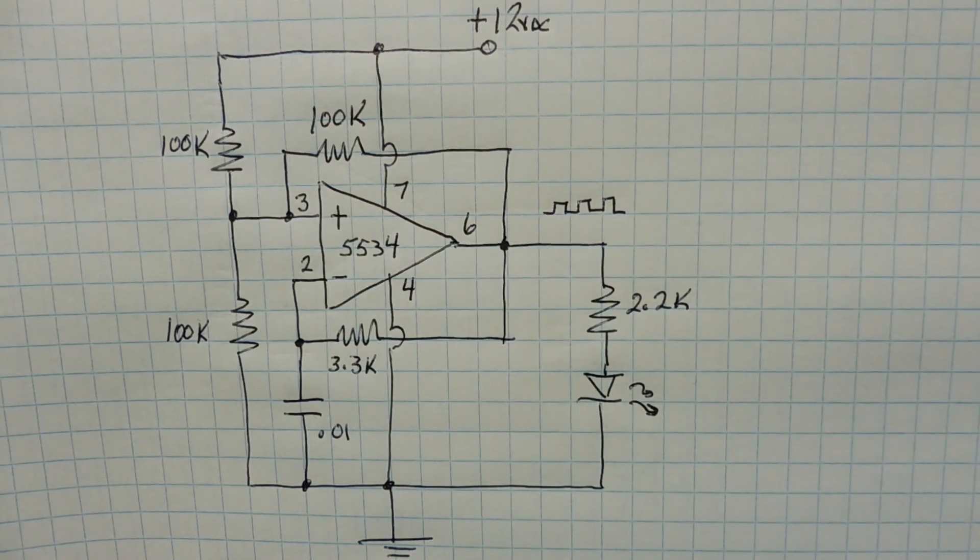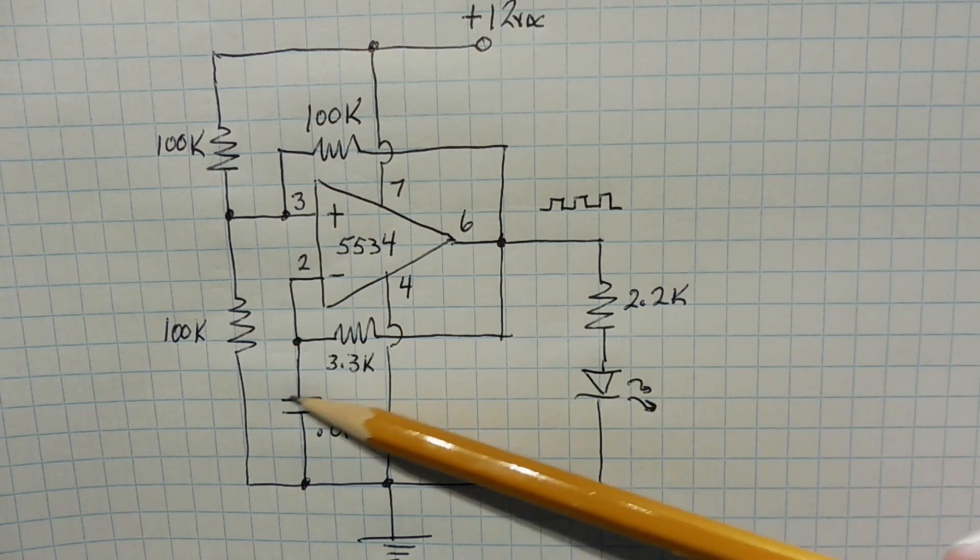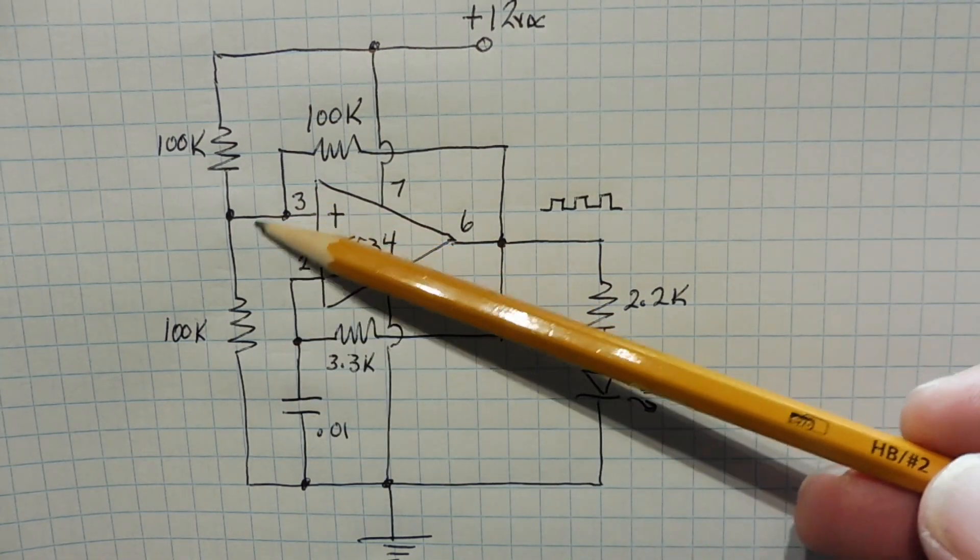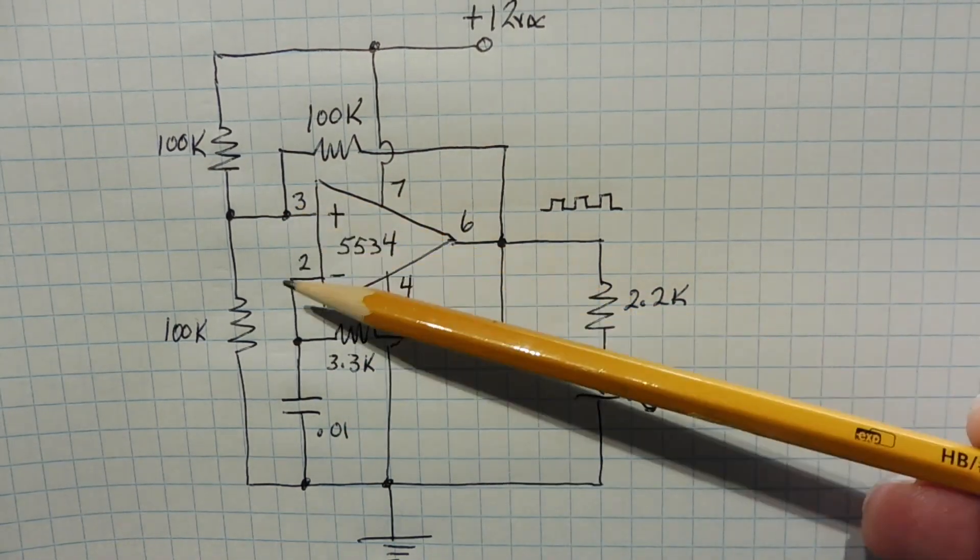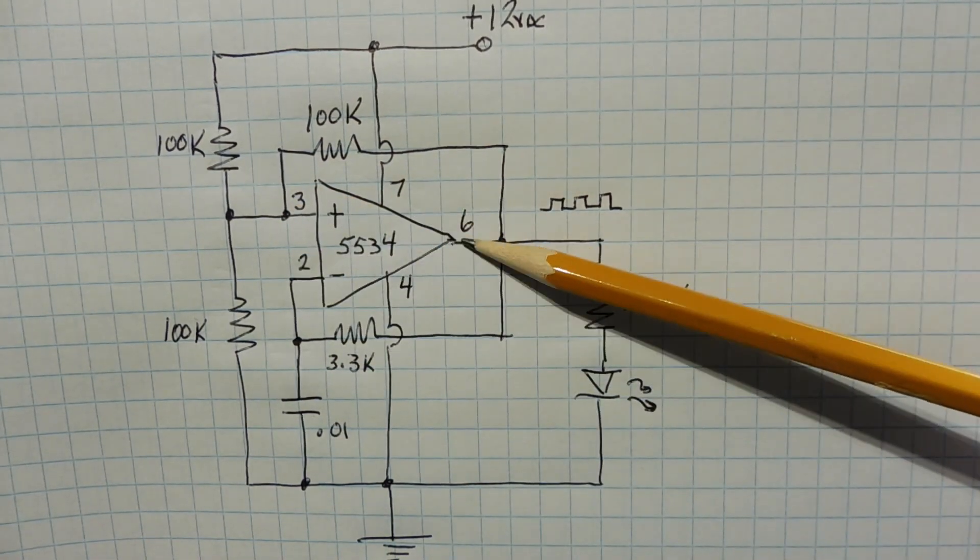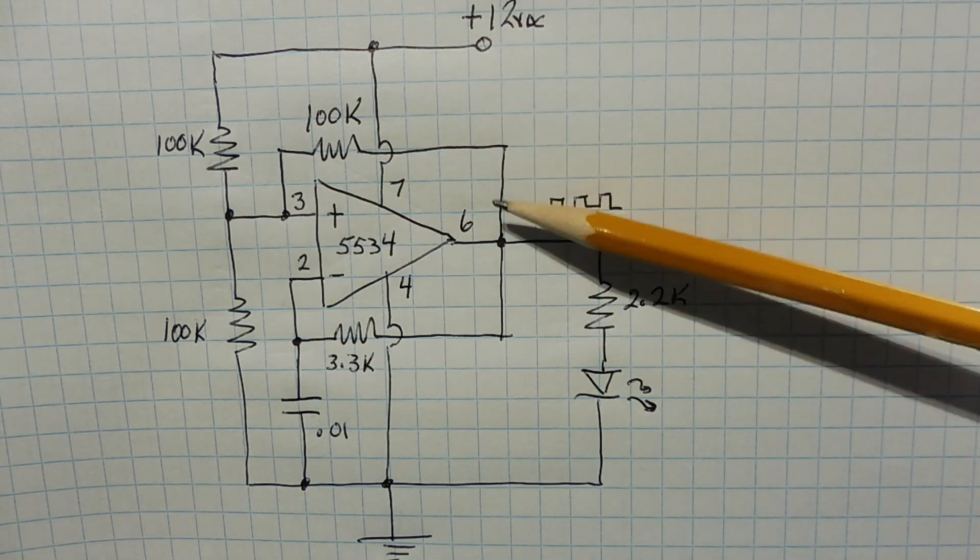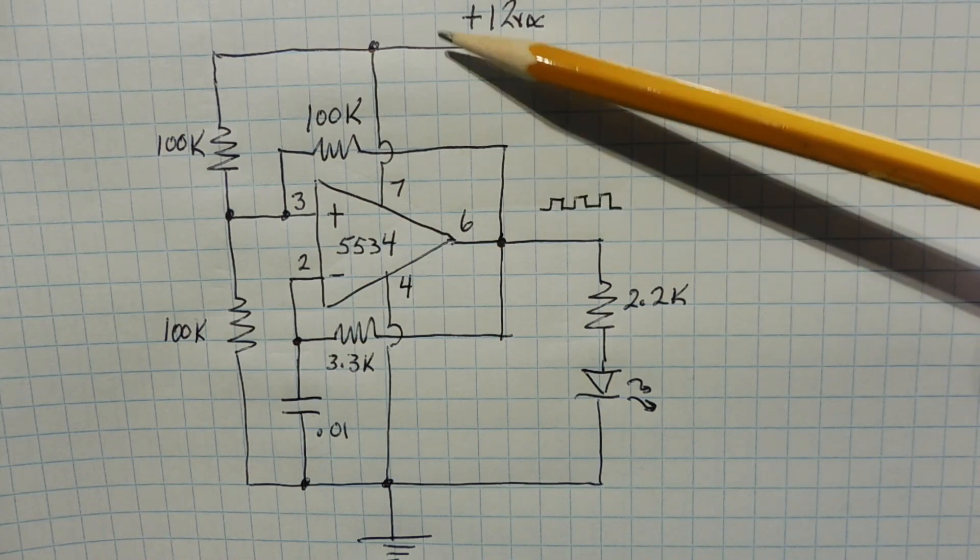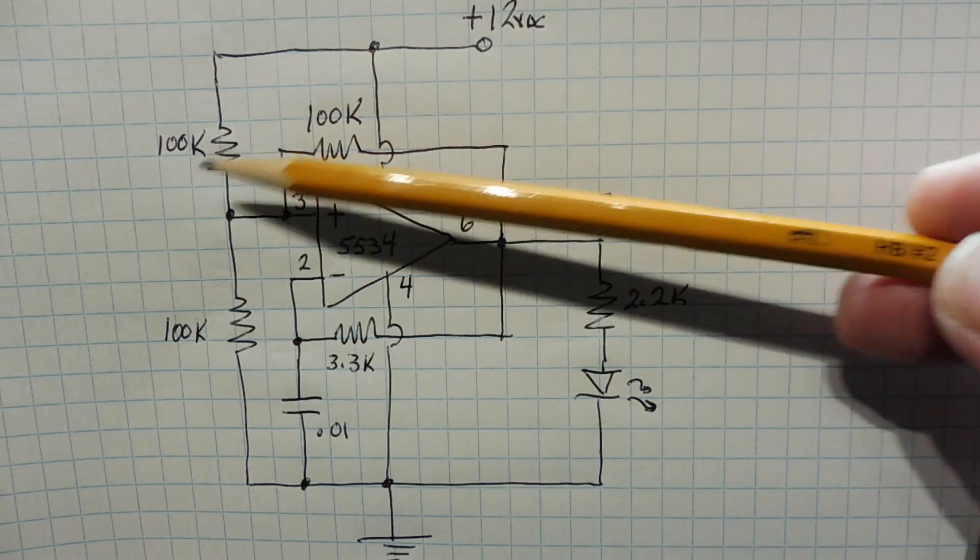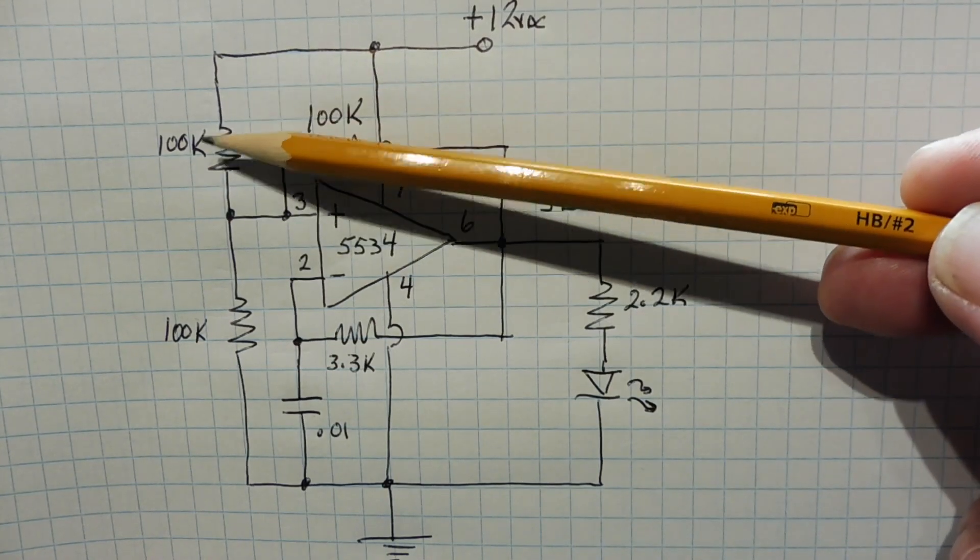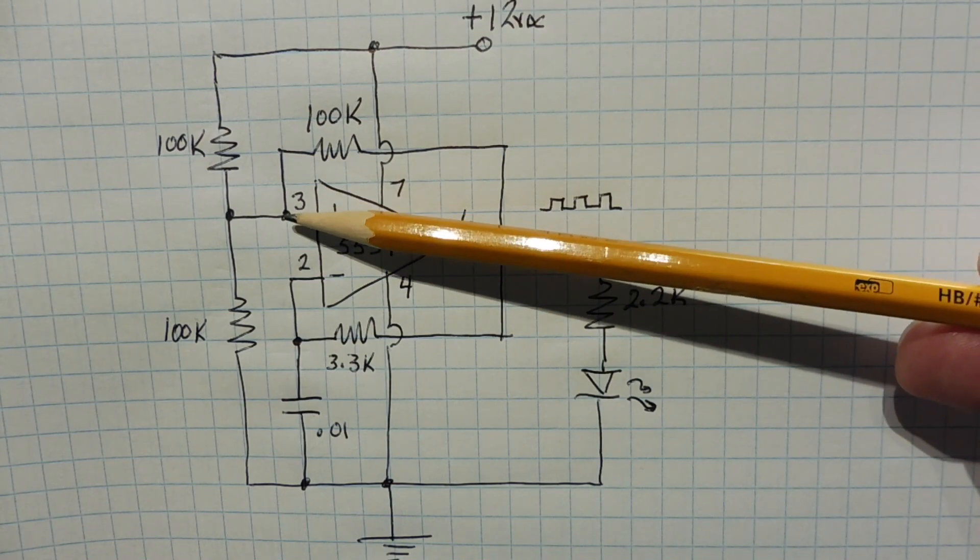Now on power-up, on time equals zero, pin 2 will be at ground potential because the capacitor will be discharged, and pin 3 will go to half VCC because of the voltage divider to 6 volts. Now pin 3 is higher than pin 2, so pin 6 will go high, it will go towards the positive rail. So when pin 6 goes high, this point of the resistor is actually connected to the rail, so this 100k will be in parallel with this 100k. So we'll have 50k ohm on the top resistor, and 100k ohm on the bottom as the voltage divider. So pin 3 now will be 8 volts.